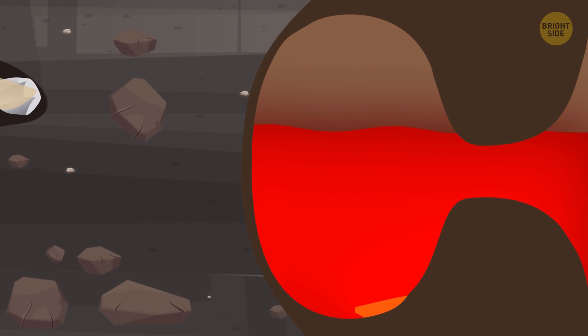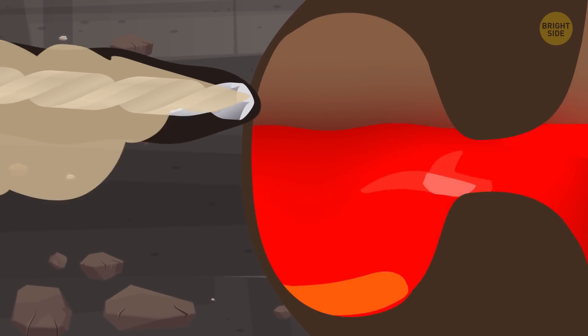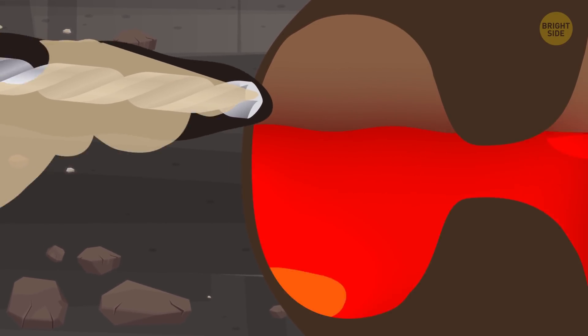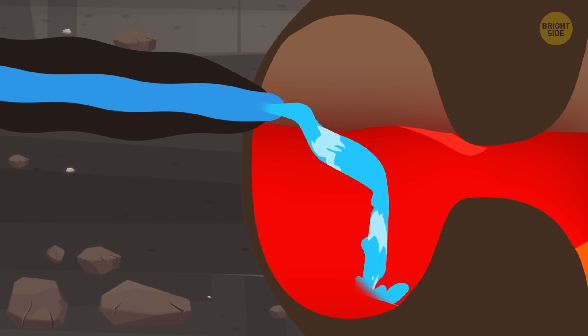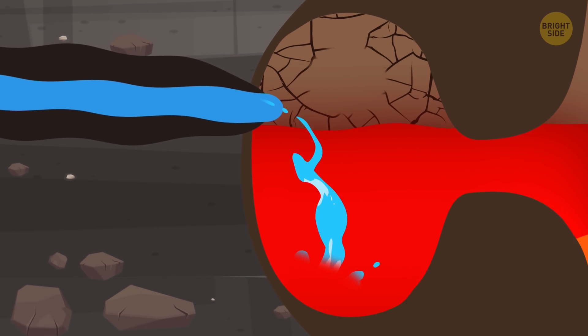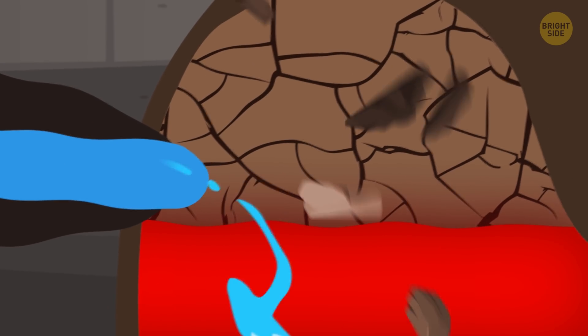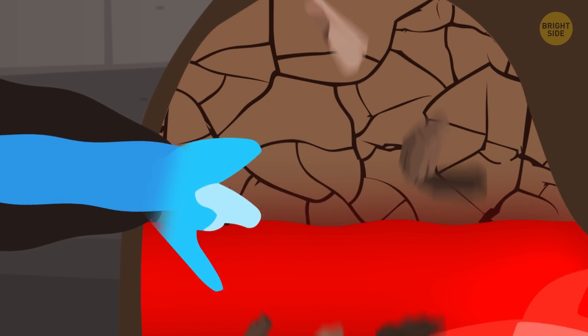For example, you drill and drill and accidentally hit a magma chamber. Then, while trying to cool down the volcano with water, you make the top of the magma chamber way more fragile than it used to be. It results in the whole structure being ready to collapse at any moment.